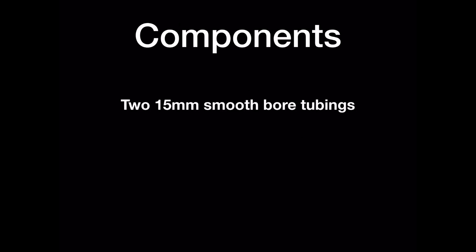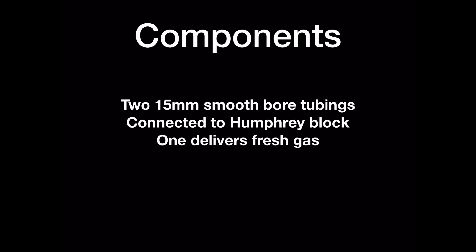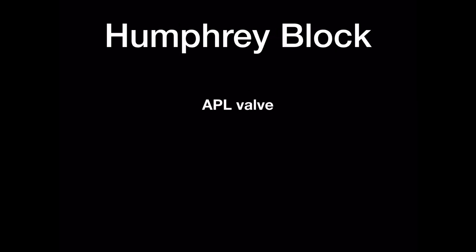Components. The Humphrey ADE system contains two lengths of 15mm smoothbore tubing connected proximally to the Humphrey block and distally via a Y connector to the patient. One length of the tubing delivers fresh gas flow whilst the other carries away exhaled gases.